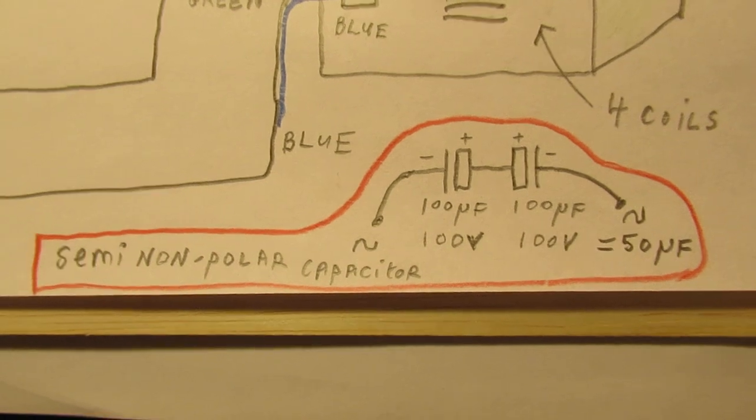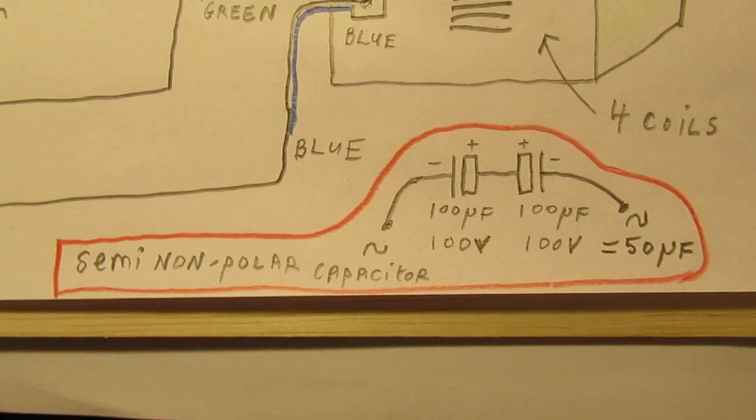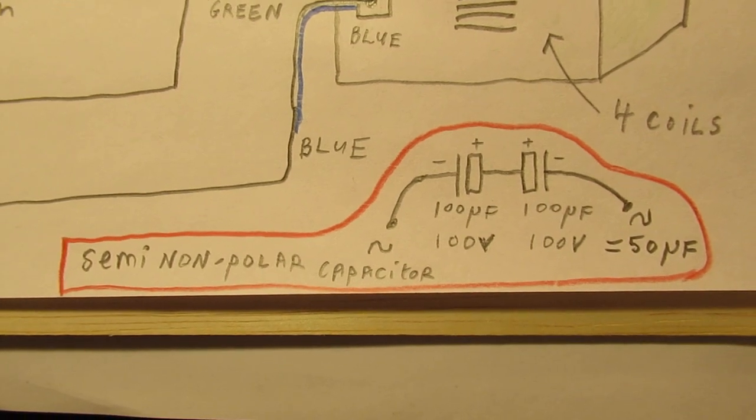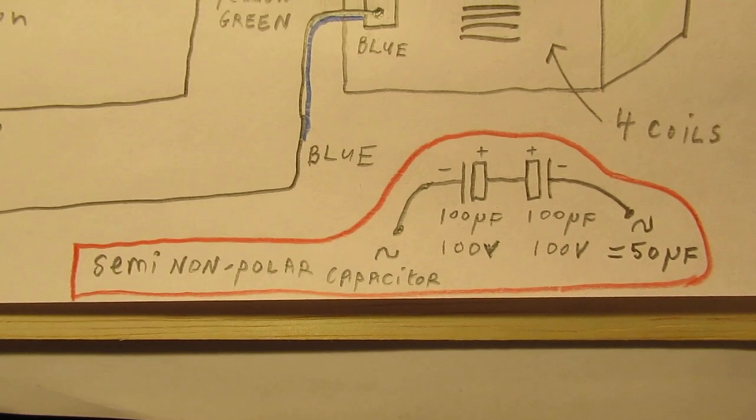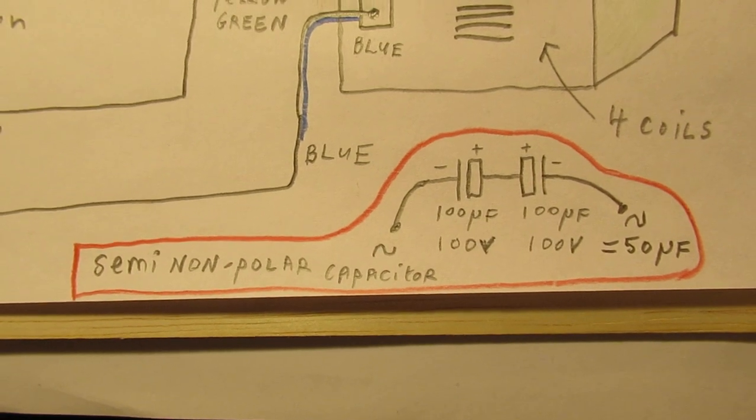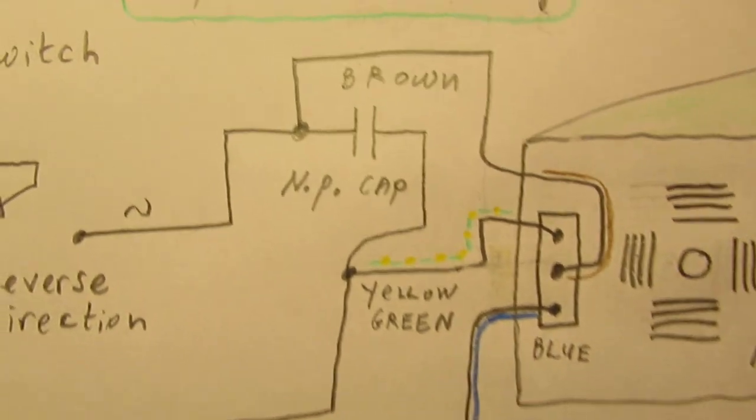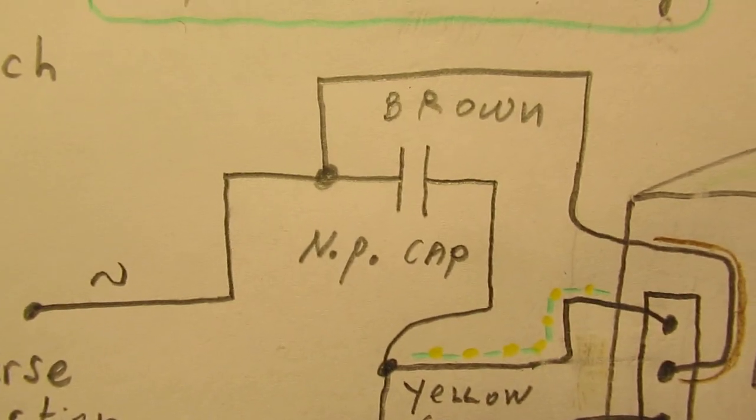They are anti-parallel switched, so that's how you can make a semi-non-polar capacitor. I don't know whether this will function on the longer term. Of course an electrolyte capacitor is not made for AC. It can work and I have done this more times in the past. The best thing is of course to buy a non-polar capacitor.